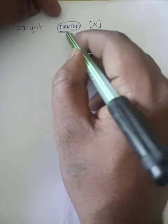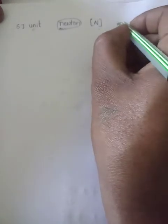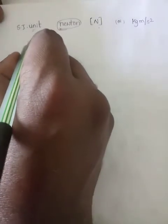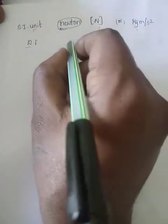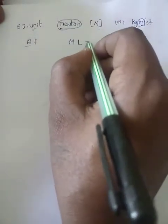The SI unit of force is Newton, represented by the letter capital N. When writing with the name it should be in small letters, but the notation uses capital N. Mass is measured in kg, and acceleration in meter per second squared. The dimension formula for force, ma, gives M·L·T⁻².